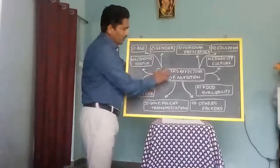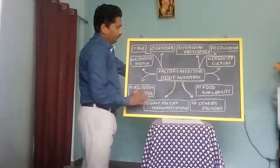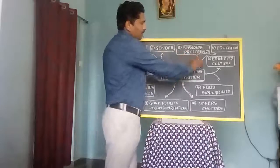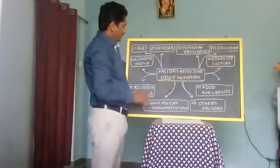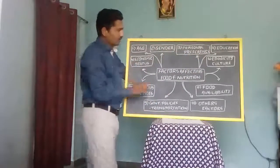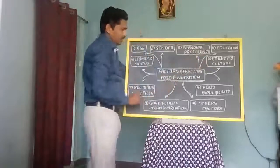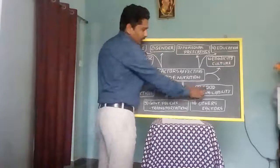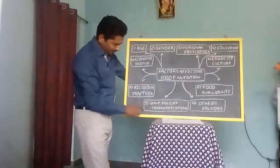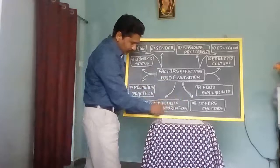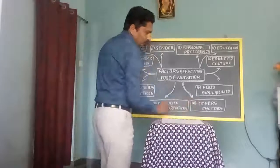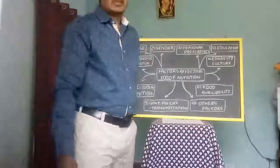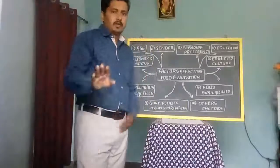To briefly recap, the ten factors affecting food and nutrition are: age, gender, personal preference, education, economical status, ethnicity and culture, religious practices, food availability, government policy, transportation and technology, and other factors. With this we complete the class. Thank you so much.